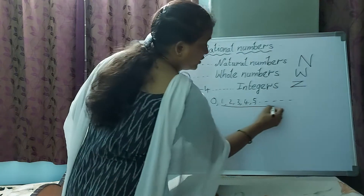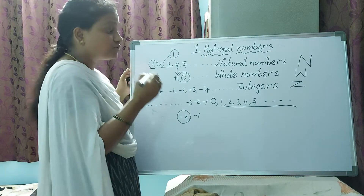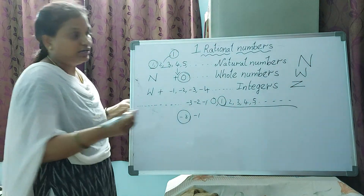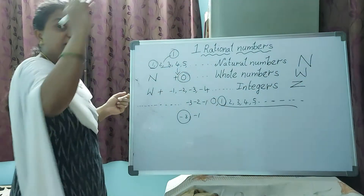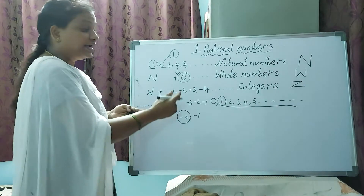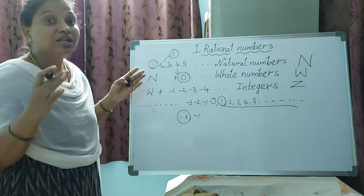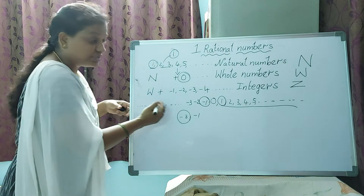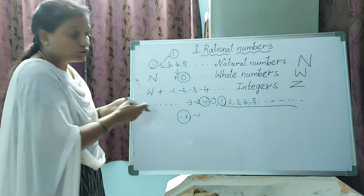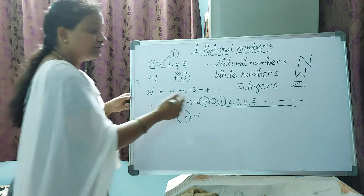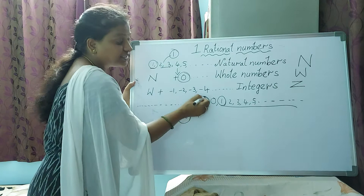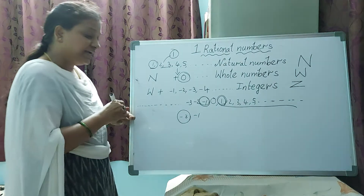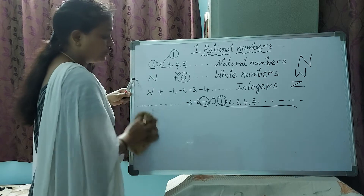For positive integers only: the smallest positive integer is 1, and the largest we can't define. For negative integers: the largest negative integer is minus 1, but the smallest we can't define. This is all about integers.